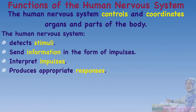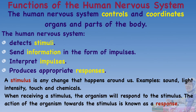Let's look at the functions of the human nervous system. The human nervous system controls and coordinates organs and parts of the body. It detects stimuli, sends information in the form of impulses, interprets impulses, and produces appropriate responses. A stimulus is any change that happens around us, while the action of the organism towards the stimulus is known as a response.